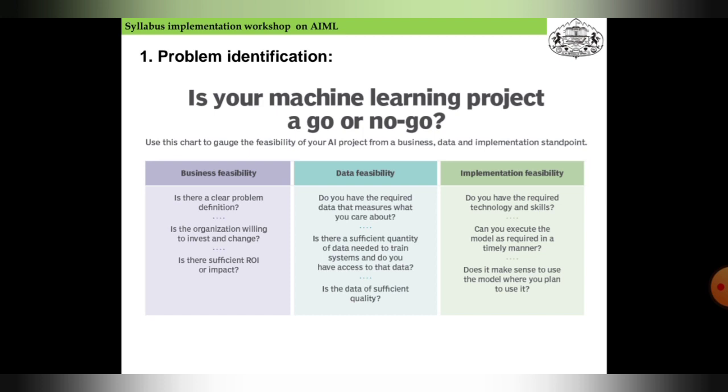Is the data of sufficient quality? For implementation feasibility: do you have the required technology and skills? Can you execute the model as required in a timely manner? Does it make sense to use the model where you plan to use it? These are the criteria for determining go or no-go.